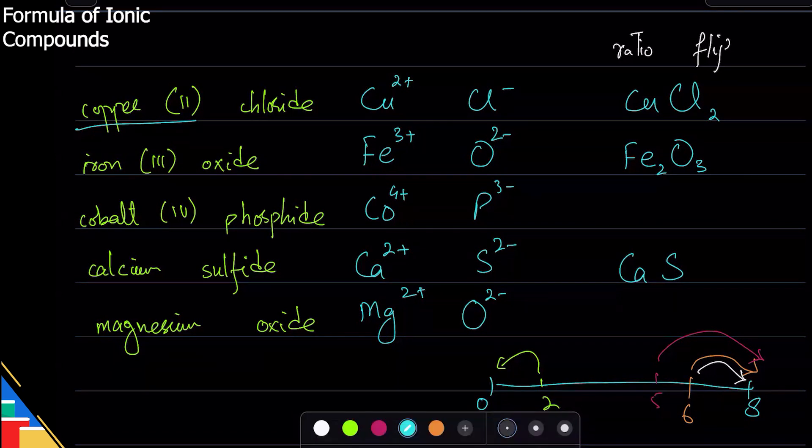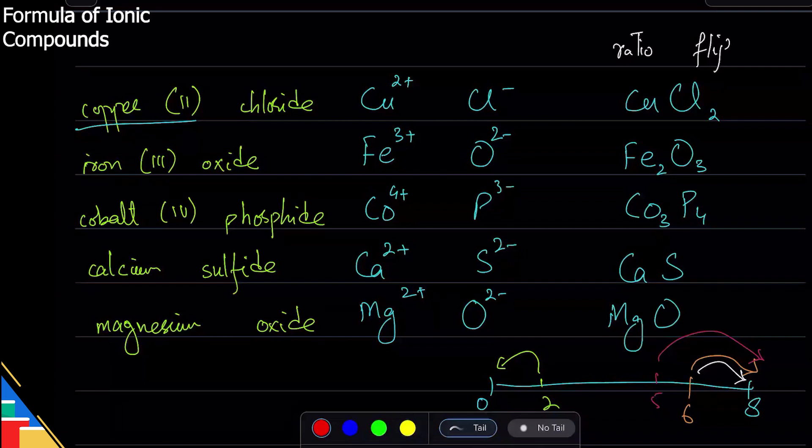Almost everybody sent the correct answer, which is Co3P4 and MgO, because the ratio cancels out. That is all about the formulas. Now the next question is: if I gave you the formula, will you be able to write the name? How do you reverse this process? The reverse is also easy.